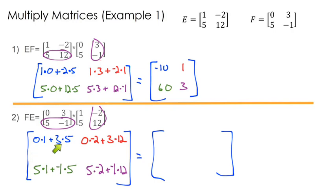0 plus 15. And then in red, we have 0 plus 36. Here we have 5 plus negative 5.